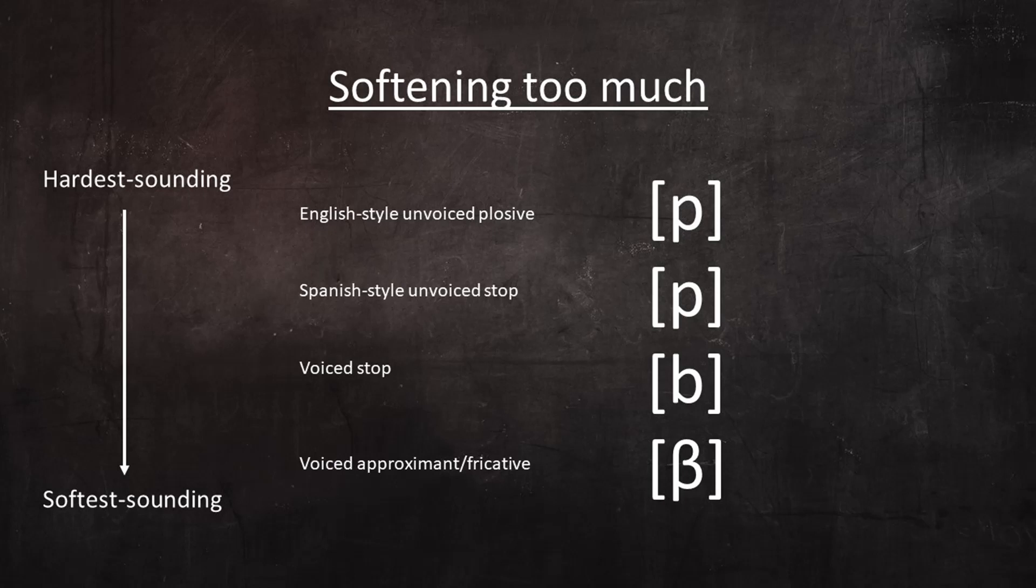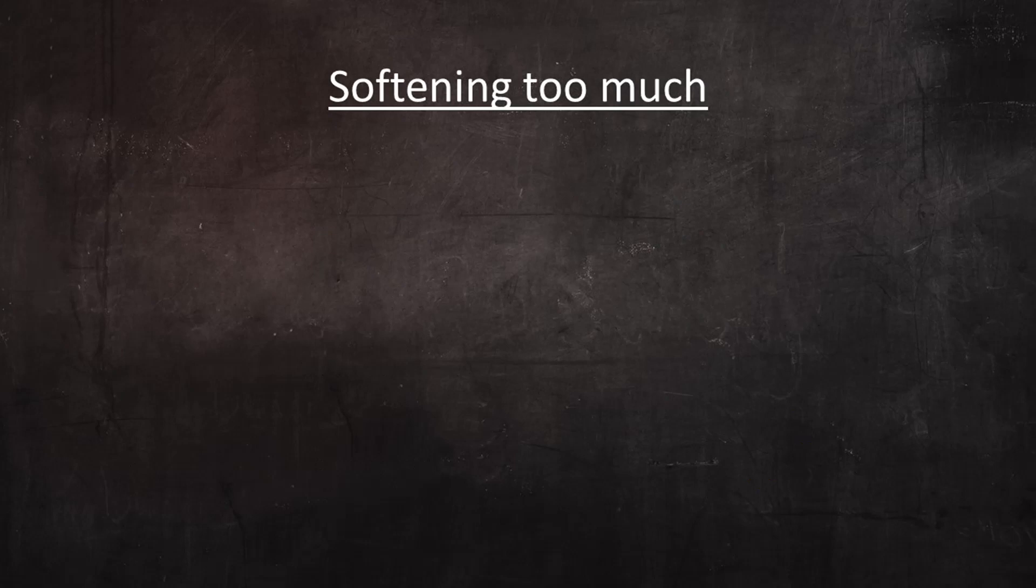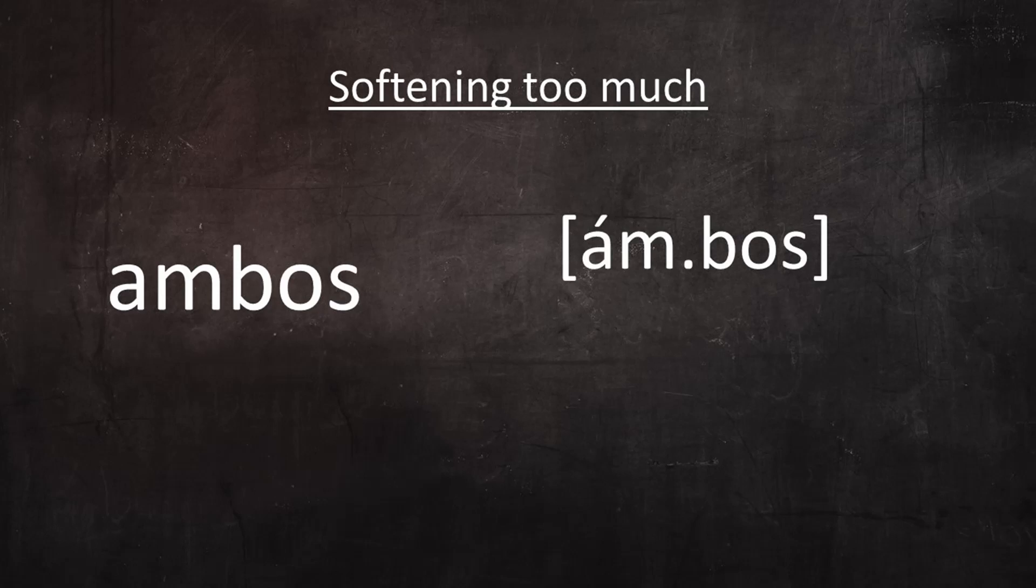The simplest way that a Spanish student might overdo their attempt to soften their Spanish speech would be to pronounce all of the voiced versions as approximants 100% of the time and never pronounce a voiced stop. An example would be the word AMBOS, which should be pronounced AMBOS, with the B pronounced as a stop because it comes after M. Ambos. A student who's over-softening their accent might pronounce this stop as an approximant or fricative and pronounce the word more like AMBOS.